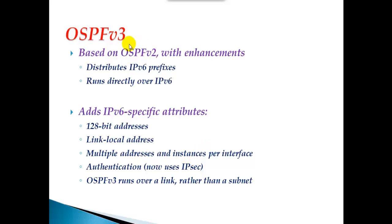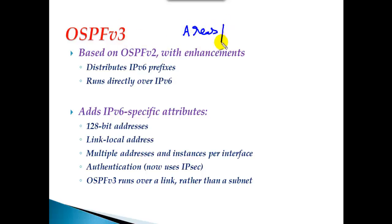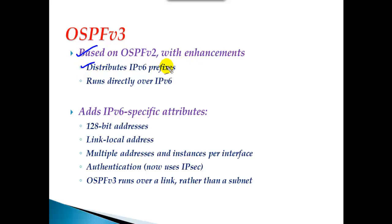In this section we'll talk about OSPFv3 protocol. In IP version 4 we have OSPFv2, which is designed for IPv4 implementations. When it comes to IP version 6, we have OSPFv3. The concept of OSPFv3 is exactly the same as OSPFv2 — areas, area 0 as backbone, advanced OSPF configurations like virtual links, summarizations, and OSPF steps. Technology-wise both protocols are exactly similar, but OSPFv3 distributes IPv6 prefixes and runs completely over IP version 6.